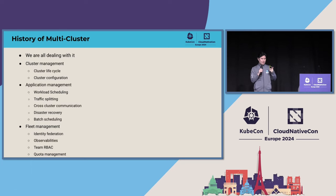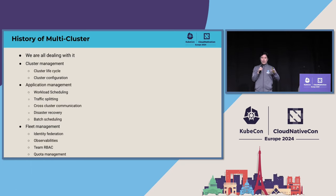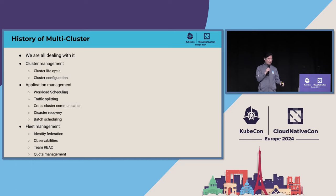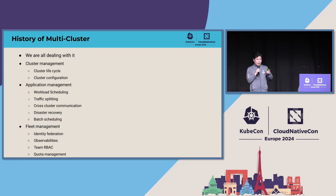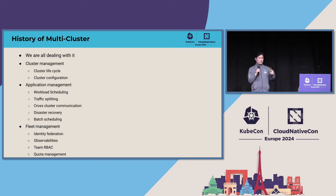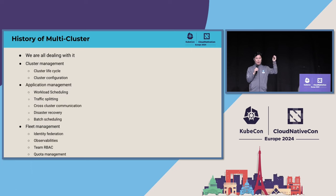There's also cross-cluster communication — east-west traffic. There's a multi-cluster service API in the multi-cluster SIG that we are in the middle of trying to revive. It's been at V1 Alpha 1 for maybe three years, but it's a community API. And the real deal for multi-cluster applications is disaster recovery. Any serious business has to have a disaster recovery story — for example, Bloomberg has to have it. Otherwise their managers won't be happy.